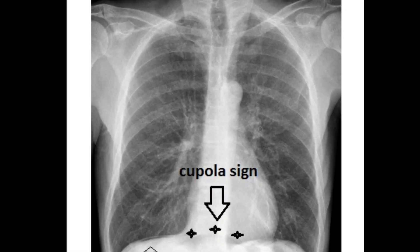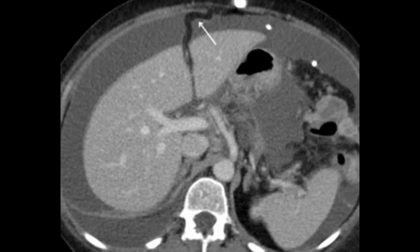On the right upper quadrant, certain signs can be picked for pneumoperitoneum. The cupola sign, appearing like an inverted cup, is indicated by white and black arrows on the chest radiograph. On the right upper abdominal quadrant, the ligamentum teres sign can also be appreciated — the white arrow on the abdominal CT scan indicates this as a confirmatory sign for pneumoperitoneum.